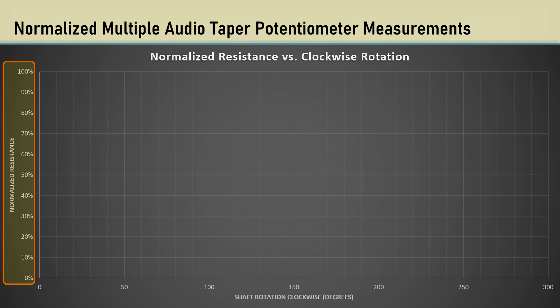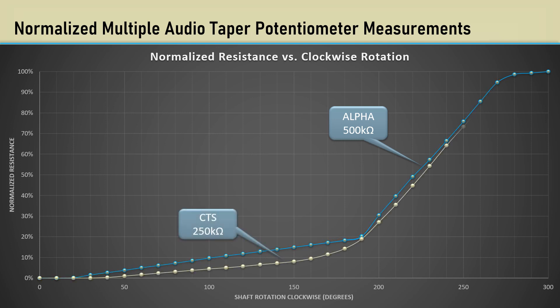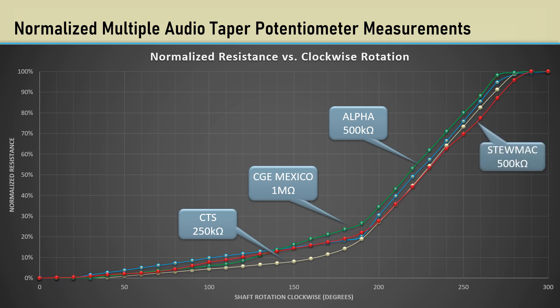The first measurement is on an Alpha 500k pot. It has a sharp break at 180 degrees, and it's clear to see there are two piecewise linear segments in the resistance track. Next is a CTS 250k. Notice it has a very gradual change between the two linear segments. Next is a CGE brand 100k made in Mexico. It has three distinct piecewise linear sections. Finally, a Stumac 500k, it appears to have two distinct linear sections. So overall, there's not a big difference in their shapes.